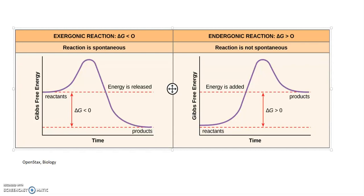Let's talk about two different types of reactions that can occur in a cell. The first is the exergonic reaction, and the second is the endergonic reaction. You can see by the graphs of each of these types that we have: on the y-axis we have energy that's increasing, and then along the x-axis we have time.